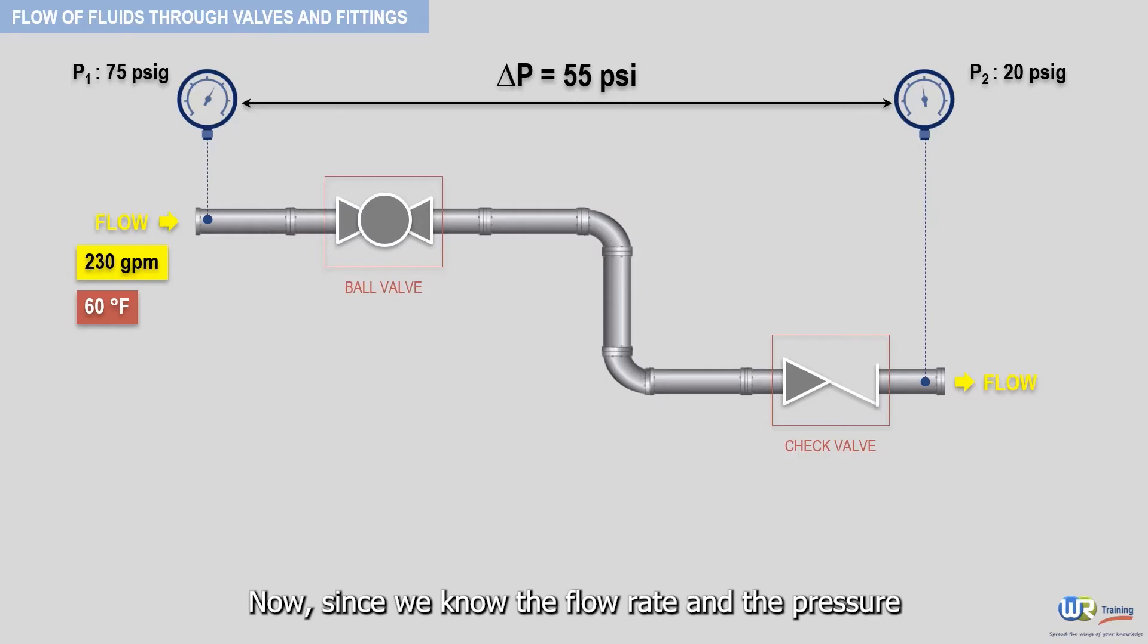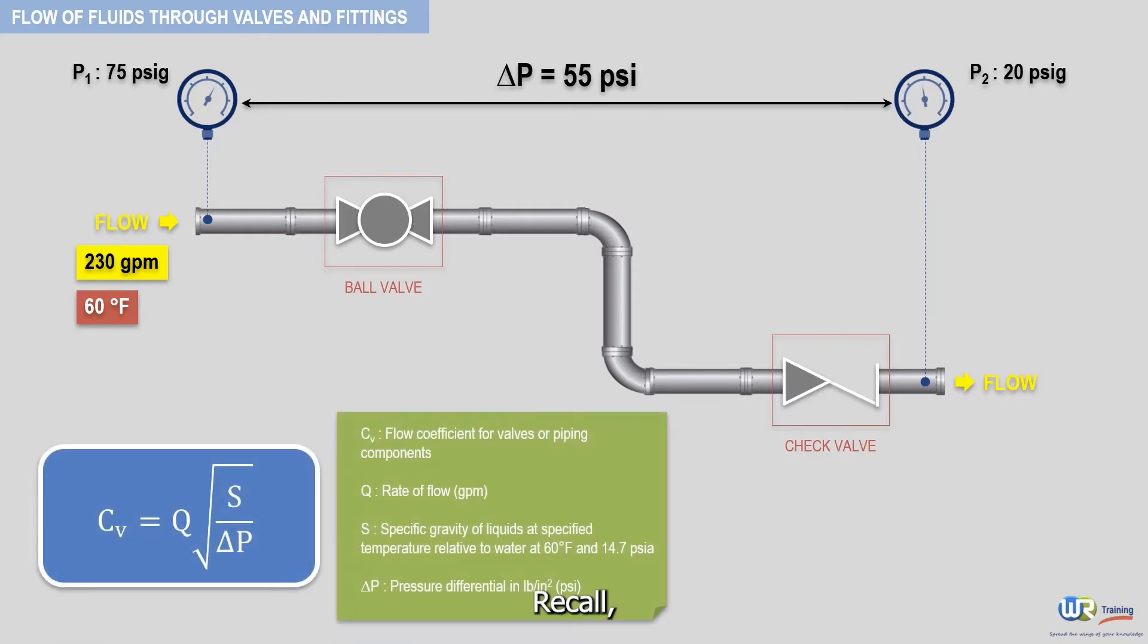Now, since we know the flow rate and the pressure drop across this piping system, then an equivalent CV can be calculated using the following formula. Recall, this formula was discussed in a previous video.